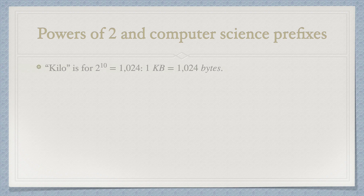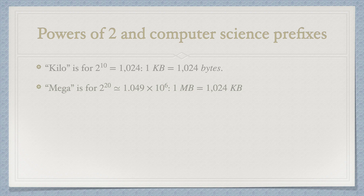In computer science, kilo is for 2 to the power 10, that is 1024. So 1 kilobyte is equal to 1024 bytes. The prefix mega is for 2 to the power 20, that is about 1.049 multiplied by 10 to the power 6.